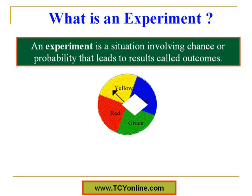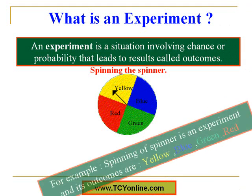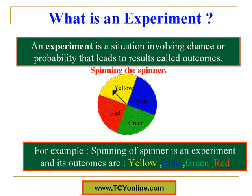First is experiment. An experiment is basically a situation involving chance or probability that leads to results called outcomes. For example, I have a spinner divided into four equal sections of different colors: yellow, blue, green, and red. Spinning this spinner is called the experiment, while landing on yellow, blue, green, or red is called the outcomes.